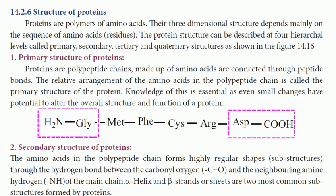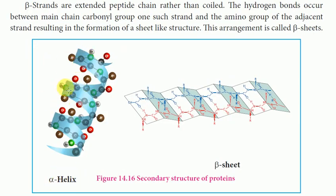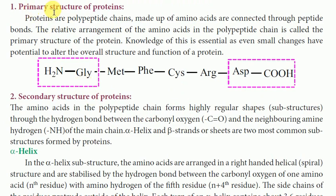The structure of proteins — proteins are polymers of amino acids. The 3D structure of a protein depends on the main sequence of amino acids. Protein structure can be described at four hierarchical levels called primary structure, secondary structure — including alpha helix and beta sheet structures.